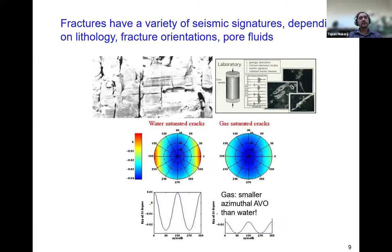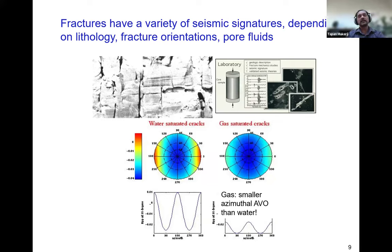Fractures are another very important area. Fractures can have a variety of seismic signatures depending on the lithology, fracture orientation, number of fracture sets, and what is inside the fracture compared to what is in the matrix. Fractures can be conduits for fluid flow — in water flooding they can be thief zones that reduce sweep efficiency. On the other hand, in a very tight reservoir, it is the fractures that contribute to fluid flow. It's very important to understand fracture intensity and orientation.